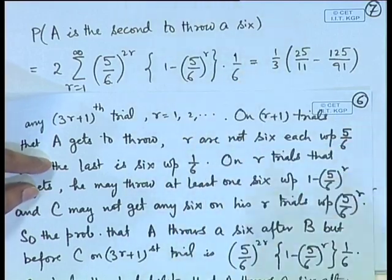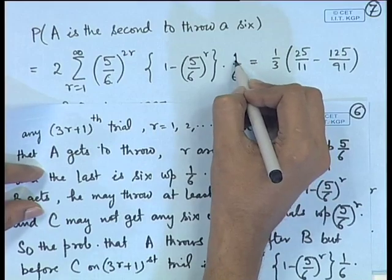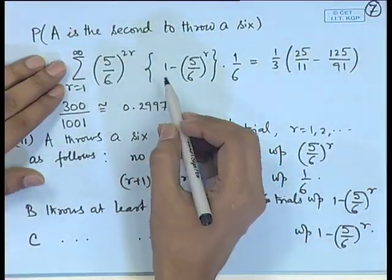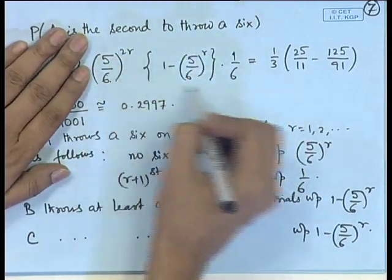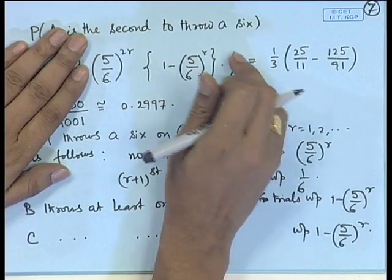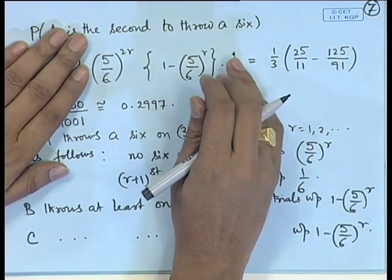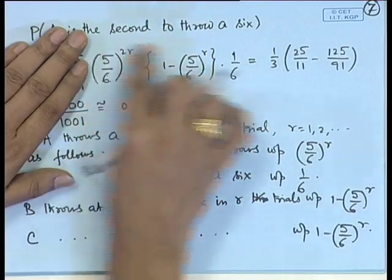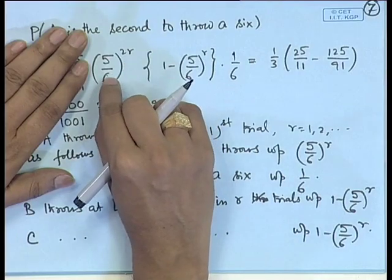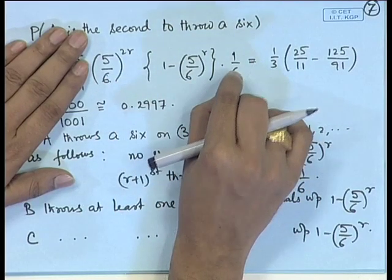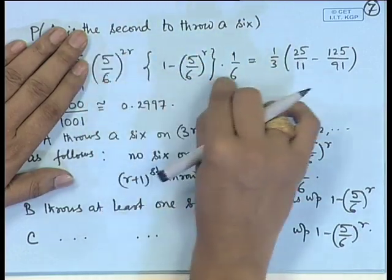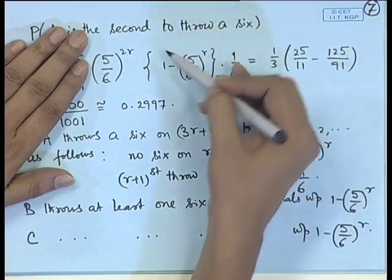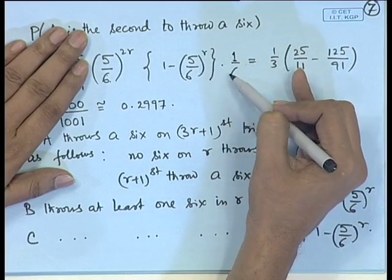This is the probability that on the (3R+1)th trial, A gets a 6, B has got at least one 6 among his R trials, C has not got a 6, and A also did not get a 6 before. Independence of trials allows us to multiply all these probabilities.